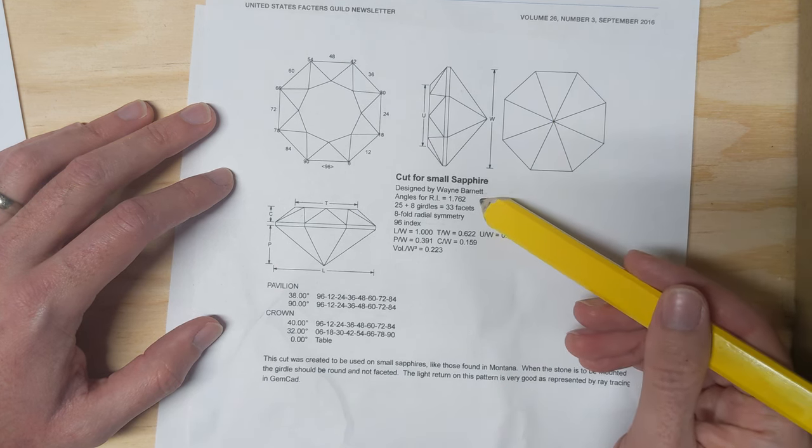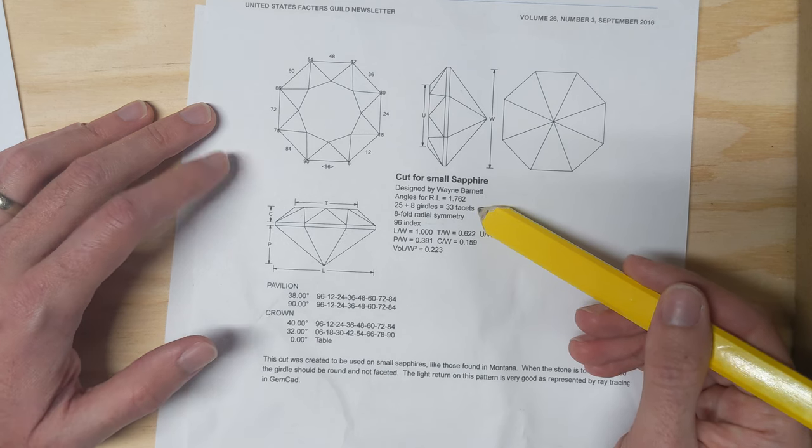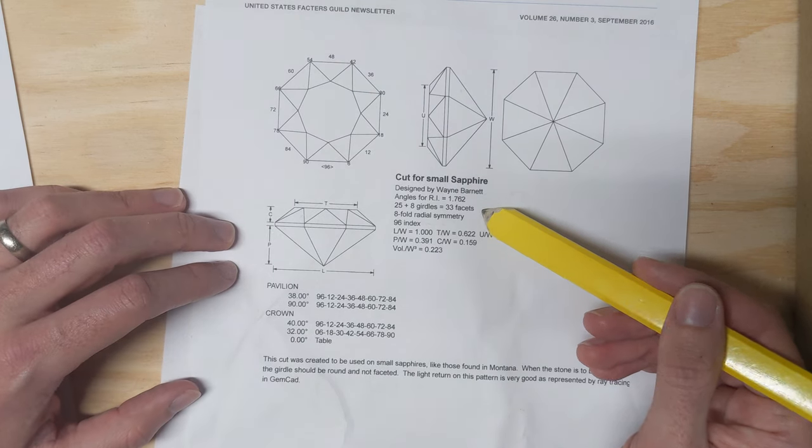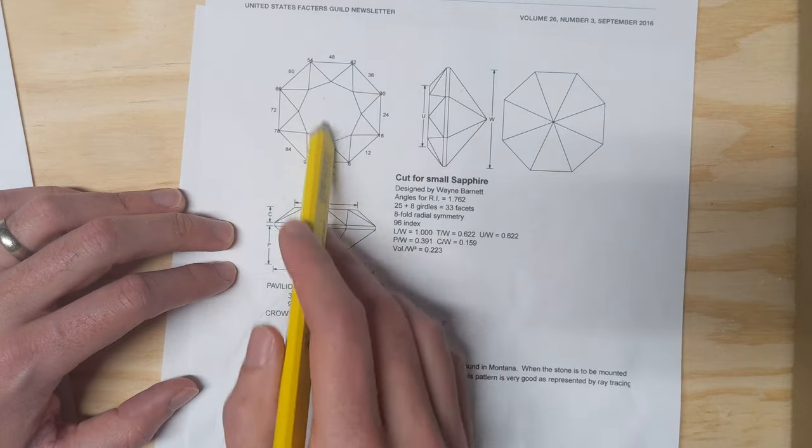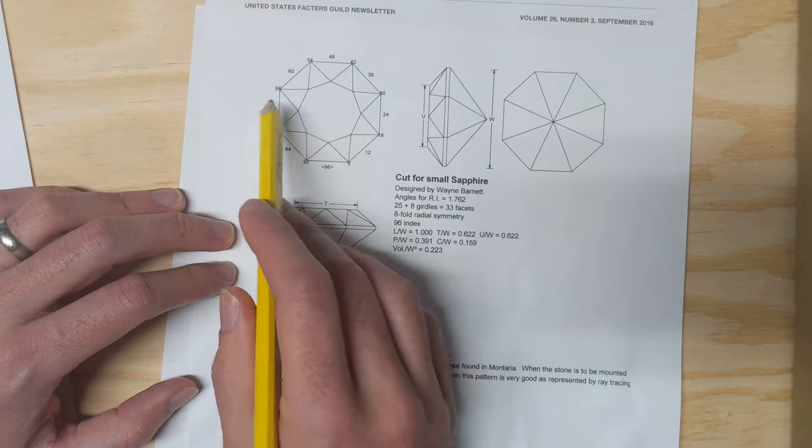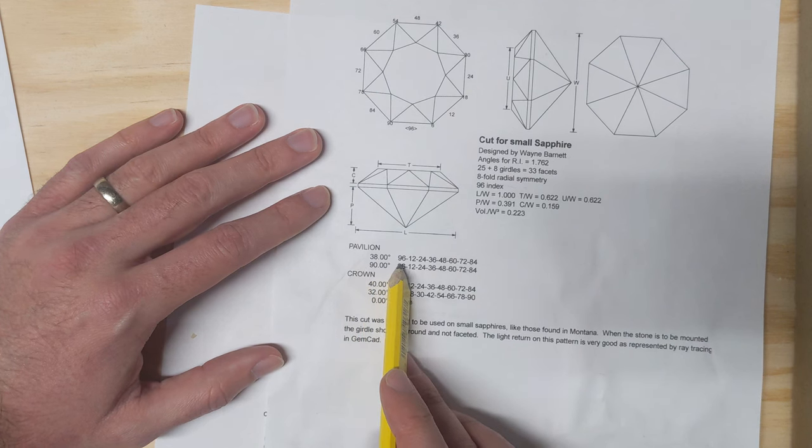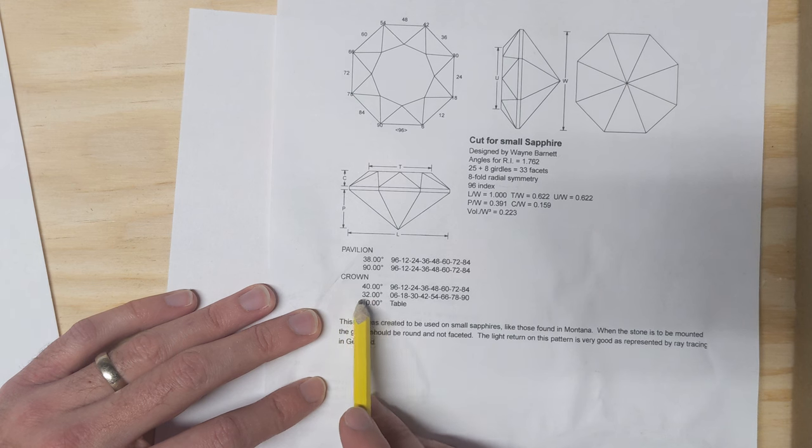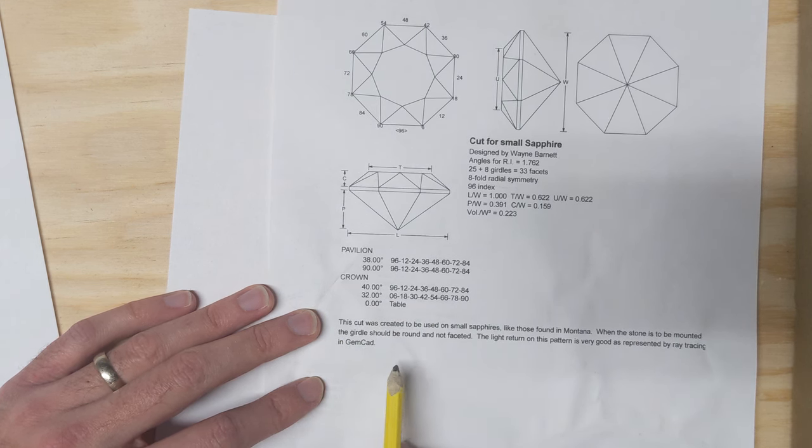It was made by Wayne Barrett for 1.762 refractive index stones. 33 facets, so the other one had 41 facets, so this is a simpler stone. Also 96 index, length to width of one, so it's the same that way and that way. The pavilion is just 38 degrees, those eight cuts, and then you make the girdle. Then you switch over to the crown and do basically 16 cuts and then a table. Polish those up and you're all done.